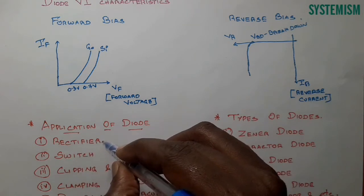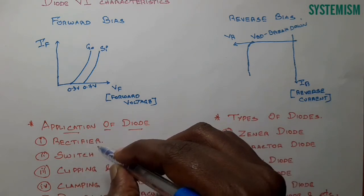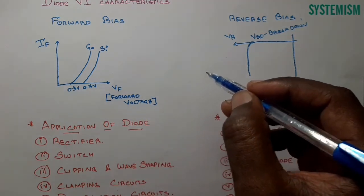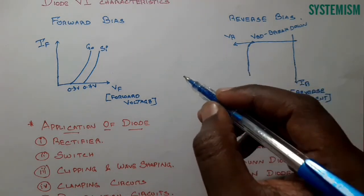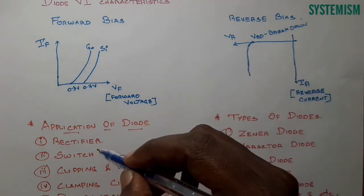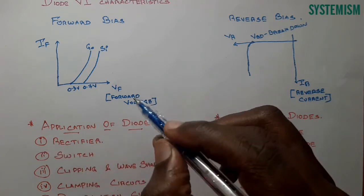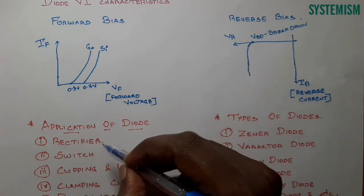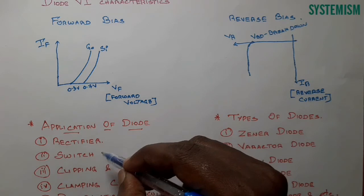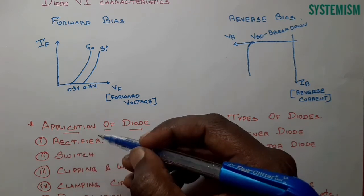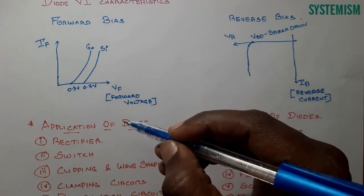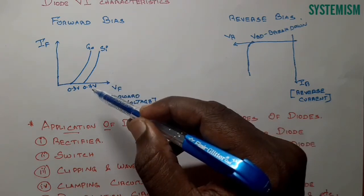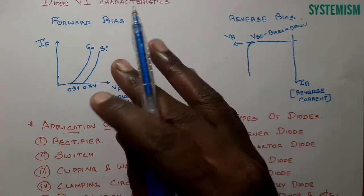We use the rectifier in day-to-day life — for example, your phone charger. Your phone battery needs DC to charge, but the plug point provides AC, so there is a rectifier in between. That is the main application of a diode. Another application is as a switch: if you provide more than 0.7V it conducts; below 0.7V it stops conducting.